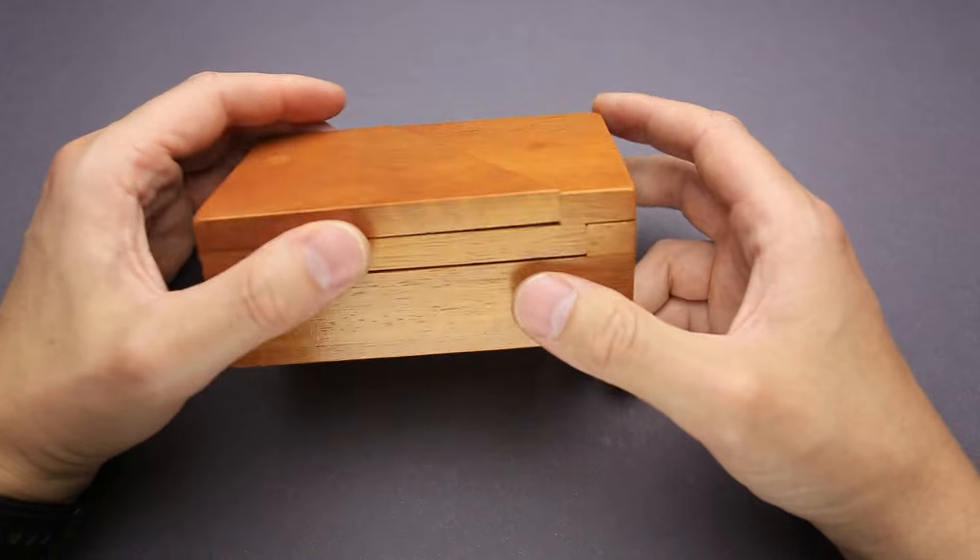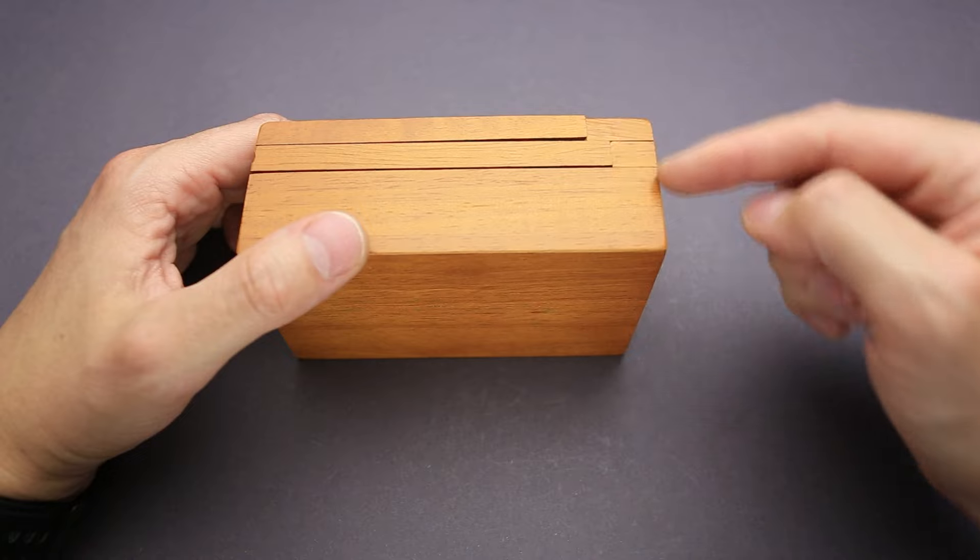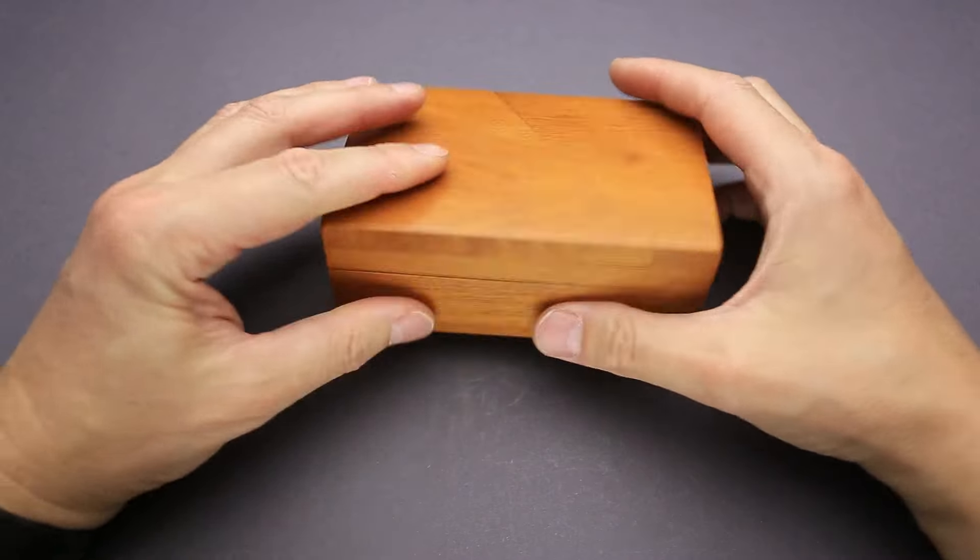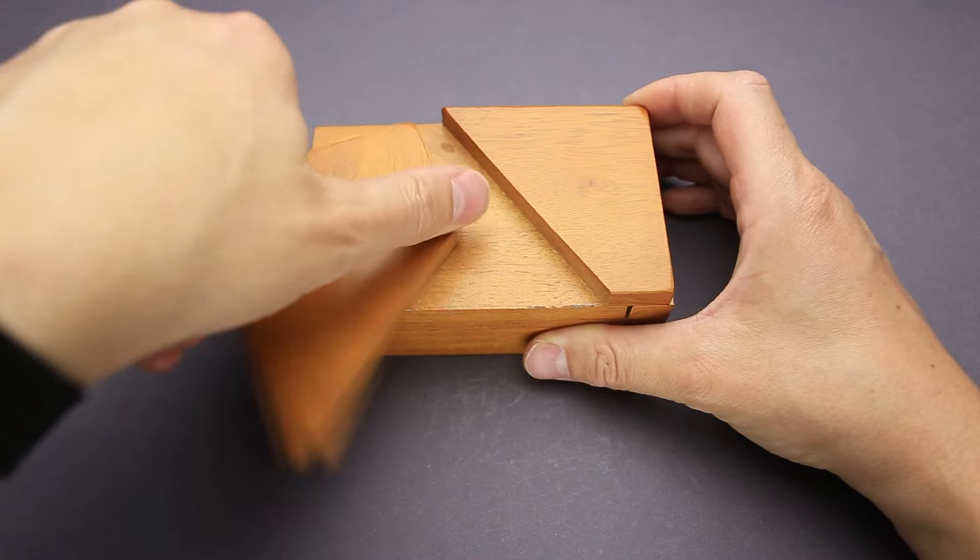So how to open the long box puzzle? First of all, you have to take a closer look at the puzzle and see that there are three parts here. There is a base, lid, and then there is a third part on the top that you can rotate, but it actually doesn't help you to open the box.